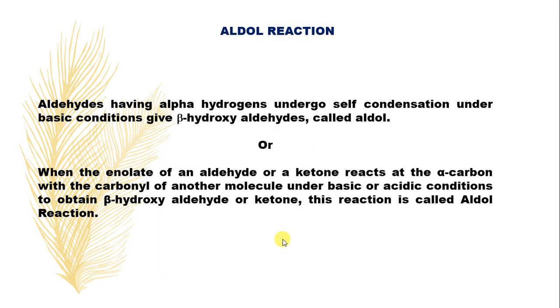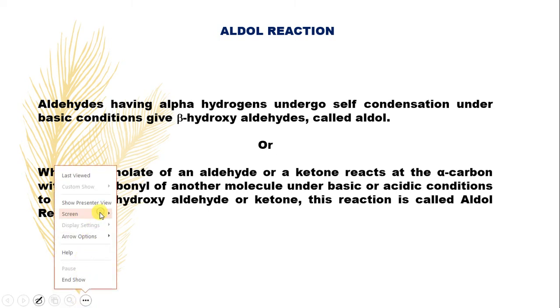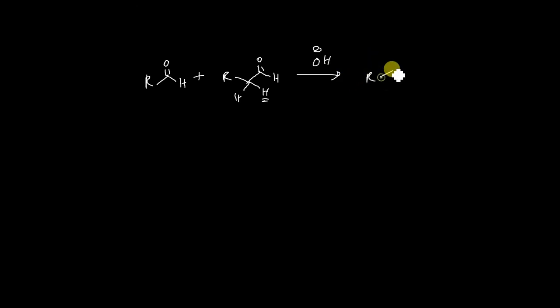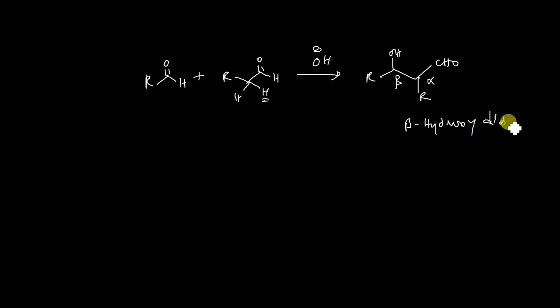Now come to the aldol reaction. Aldehydes having alpha-hydrogens undergo self-condensation under basic conditions to give beta-hydroxy aldehydes. This is called aldol — the beta-hydroxy aldehyde is called aldol. For example, if you take two aldehydes, one of the aldehydes should have an alpha-hydrogen. When you treat these two molecules with base, they generally produce a beta-hydroxy aldehyde. This is called aldol.